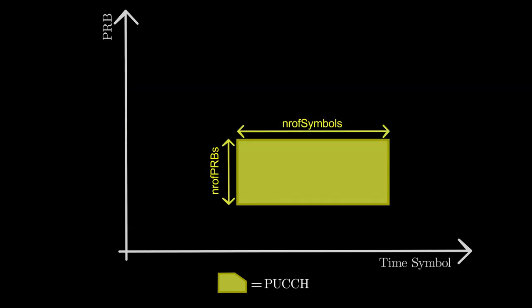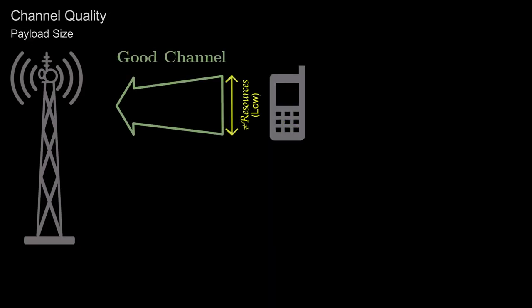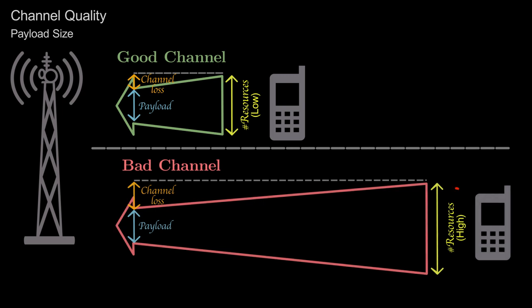The number of resources allocated for PUCCH depends on two factors. If the channel quality is good, then less resources are needed for transmission of a given payload size. On the other hand, if the channel quality is bad, then more resources are needed to transmit the same payload.